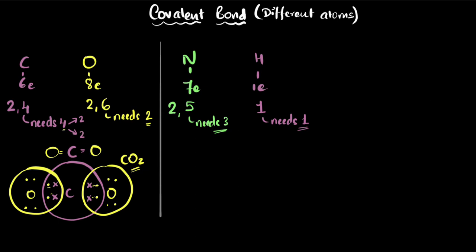You know what it can do? Nitrogen can share with three hydrogens, one each. So that means we'll have three hydrogens. So let's draw the dot structure now.